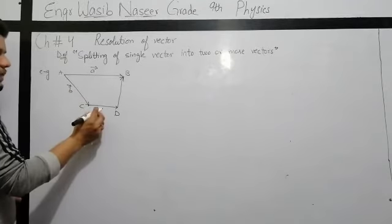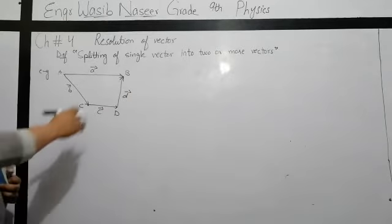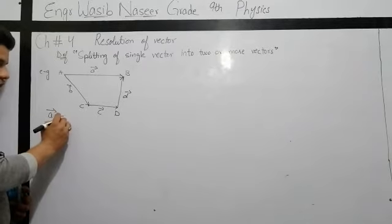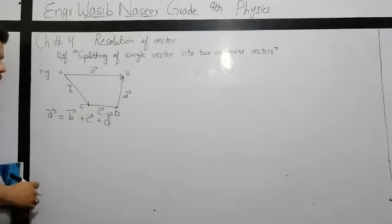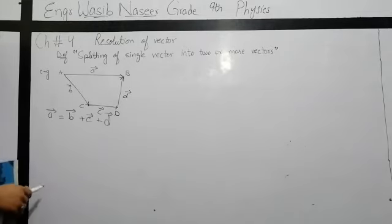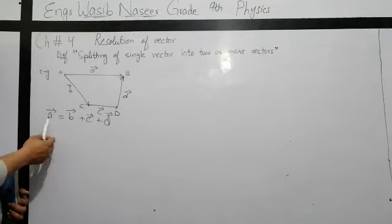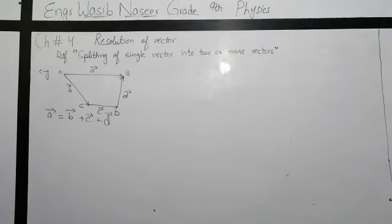For example, I have vector B, vector C, and vector D. So what I did: I had a single vector A to B, and I made three new vectors from that vector. This equation says that I will separate a single vector A into three vectors B, C, and D. This process is called resolution of vector.